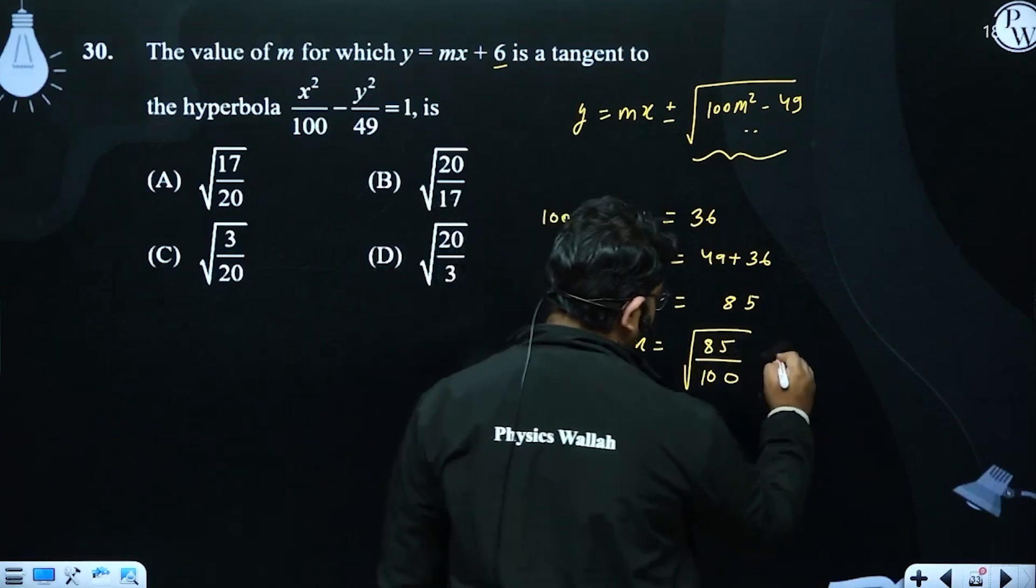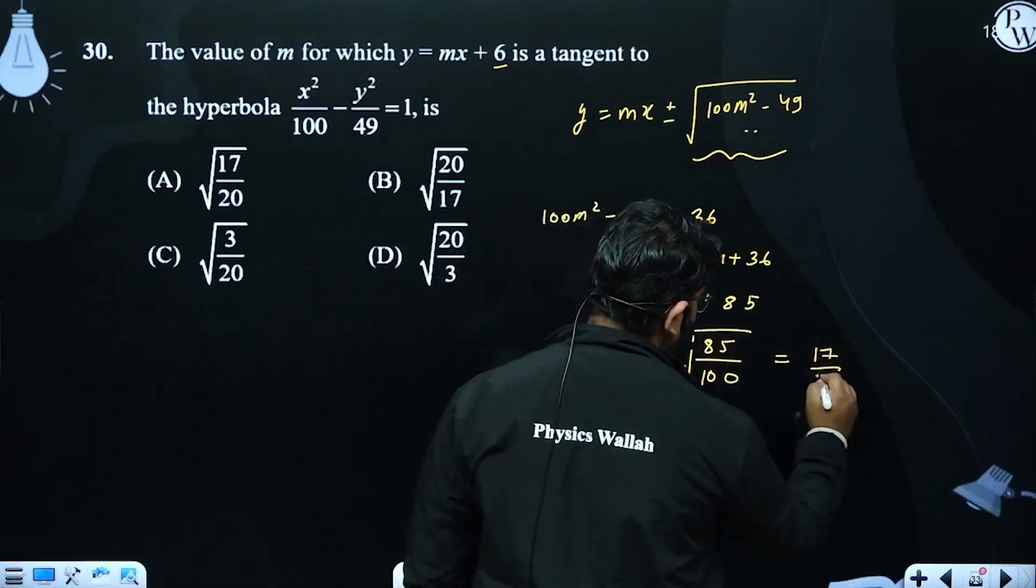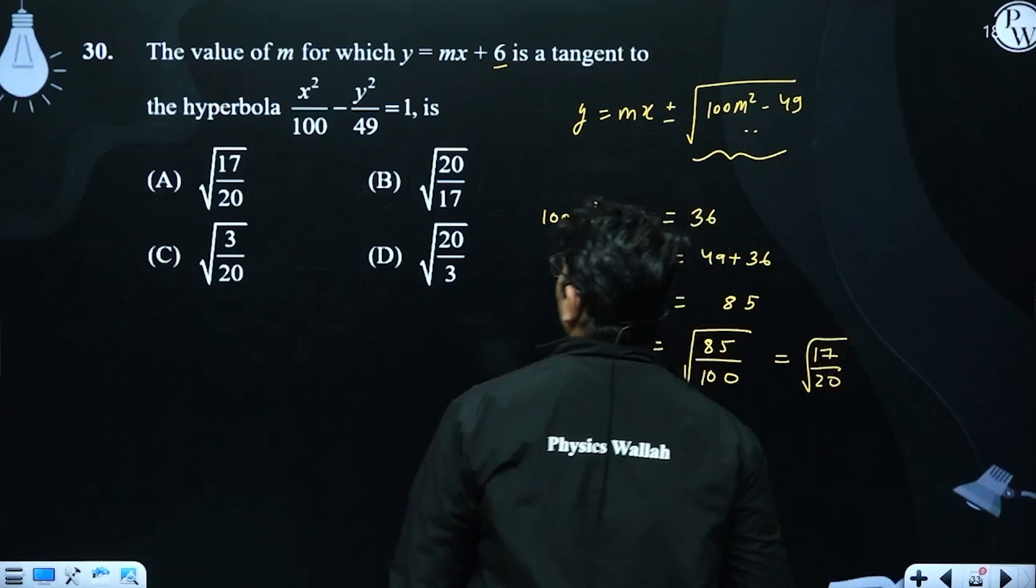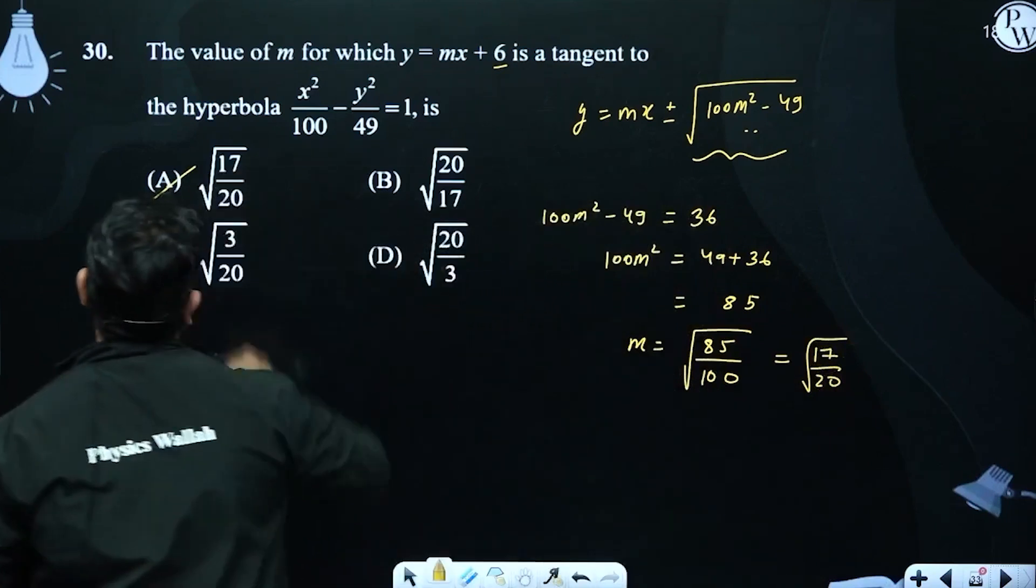Simplify, do it. 5 will cancel. 17 by 20 is under root. Root 17 by 20 is option A.